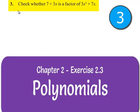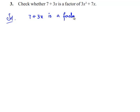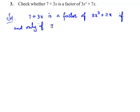Moving on to the third problem: check whether 7 plus 3x is a factor of 3x³ plus 7x. So, 7 plus 3x is a factor of the given polynomial 3x³ plus 7x if and only if 7 plus 3x divides the given polynomial 3x³ plus 7x leaving no remainder.